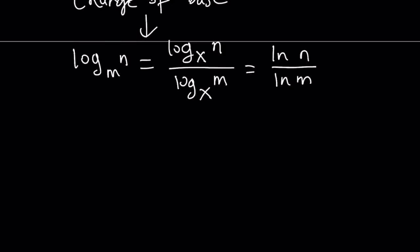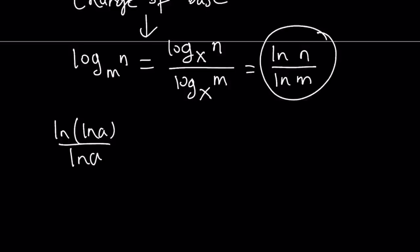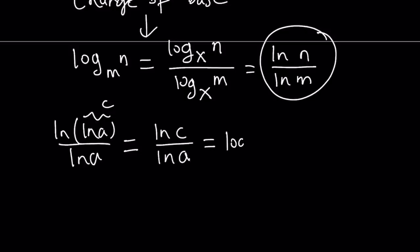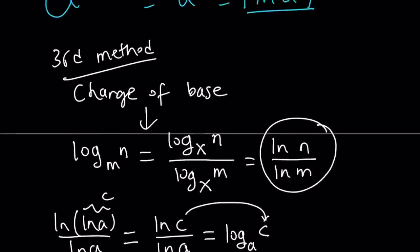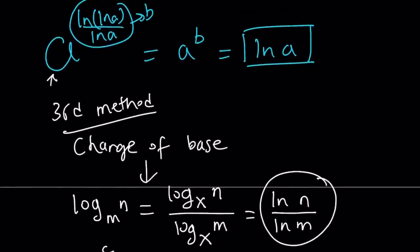Now, how are we going to use the change of base here? We're going to use it backwards. We have ln ln a over ln a. Look at this expression — if ln a is equal to n and a is equal to m, then by using change of base backwards we can write this as ln c over ln a, where c equals ln a. And I'm going to write this with base a, so this can be written as log c with base a. The reason it's important to get a log with base a is that our original expression has base a.